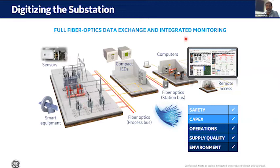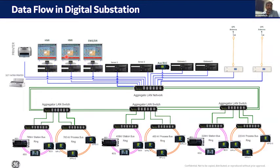Since we are digitizing information right from the process side, we get more information in terms of monitoring, supervision, and situational awareness. In one recently proposed project architecture, you can see the process bus ring and the station bus ring at different voltage levels — all redundant. Whether it is the station bus or process bus, availability has improved. Earlier, the CT core connection went directly to the relay as a single connection; now redundancy is built into the communication media itself.